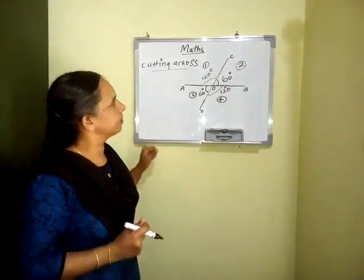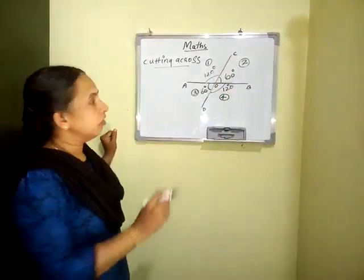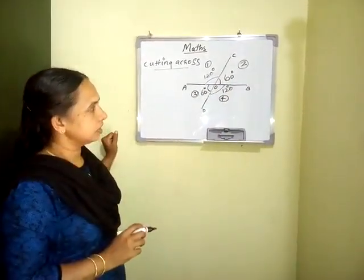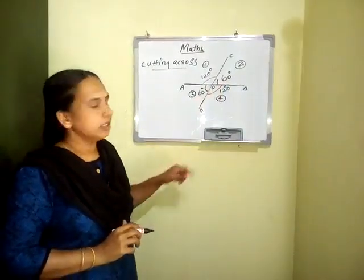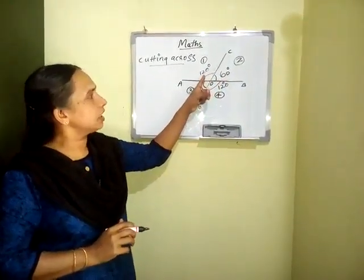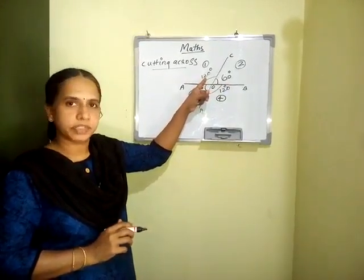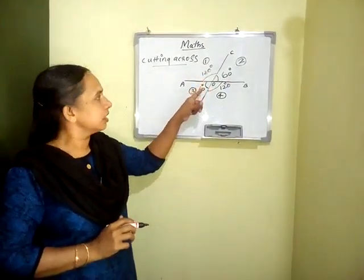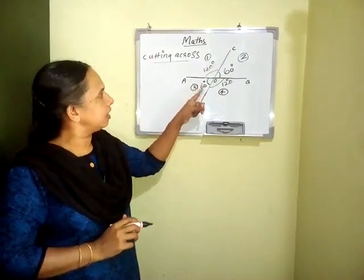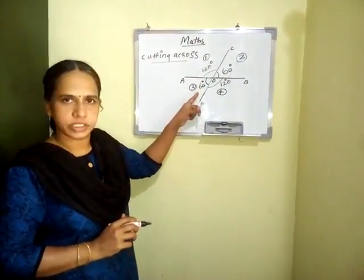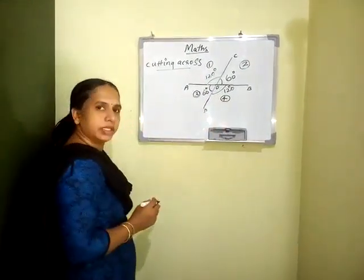Now, look at this. Two lines cutting across each other — four angles are formed. Suppose the first angle equals 60 degrees, then the next nearby angle equals 120 degrees, because they make a linear pair. Then angle AOD equals 60 degrees, and the next nearby angle equals 120 degrees.